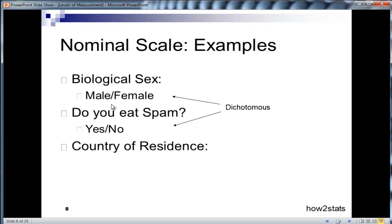Now country of residence is a nominal scale that could and usually does have more than two categories.